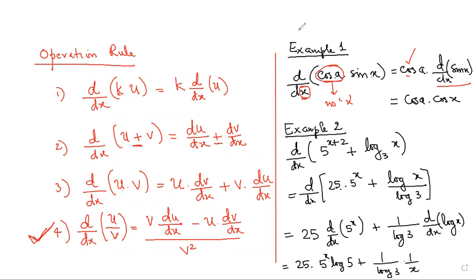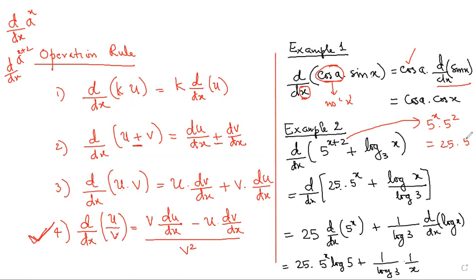Second point: we only have a formula for derivative of aˣ. We do not have a formula to differentiate aˣ⁺². So 5^(x+2) is written as 5ˣ·5² = 25·5ˣ. Also, log base 3 of x equals log(x)/log(3). If there's a plus sign, you can differentiate term by term by removing constants outside.